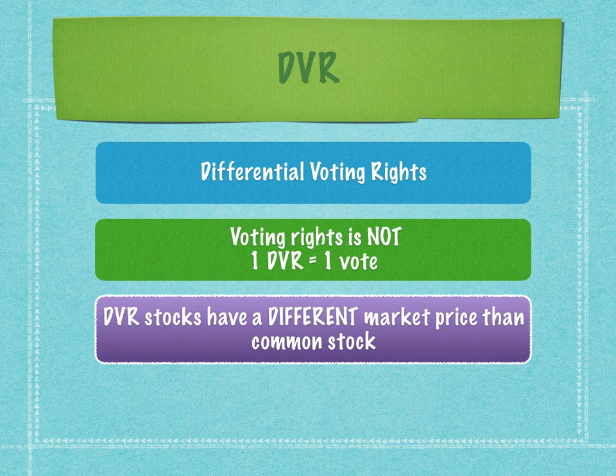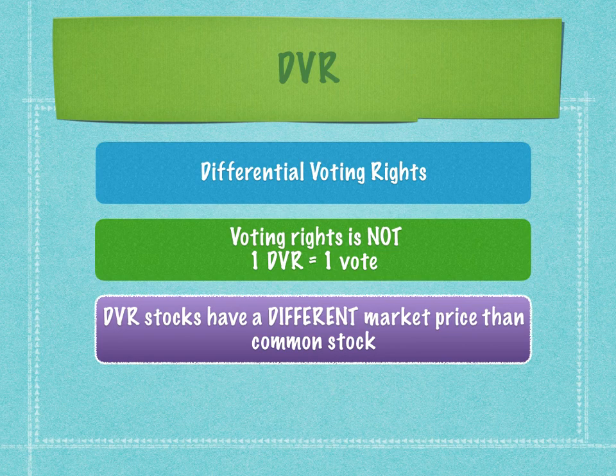That is the main distinction. If you look at companies like Tata Motors, they have both common stock listed as well as DVRs listed. Which price would be higher — the common stock or the DVR? Obviously, the price of DVR stock will be lower, because the voting rights are much reduced for DVRs compared to common stock.